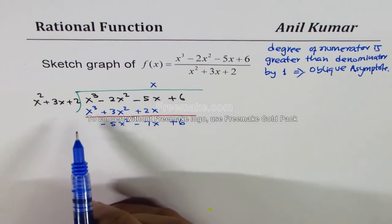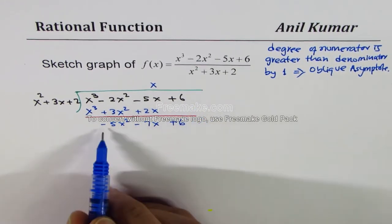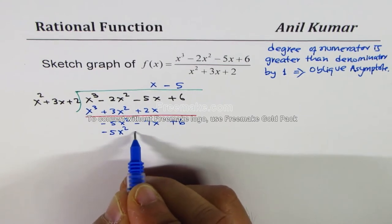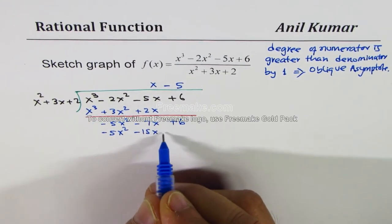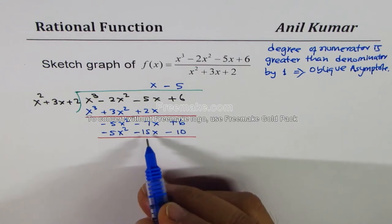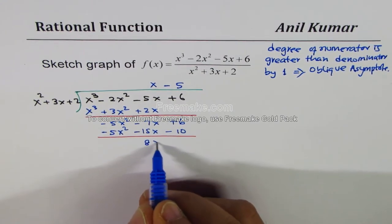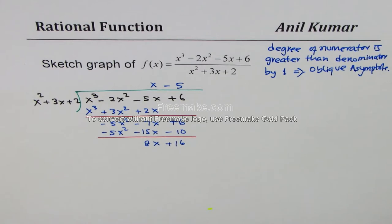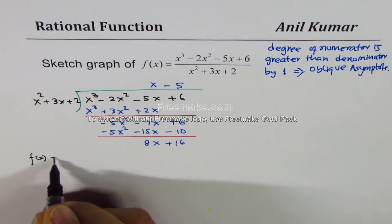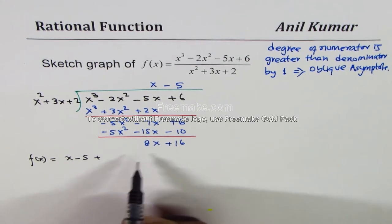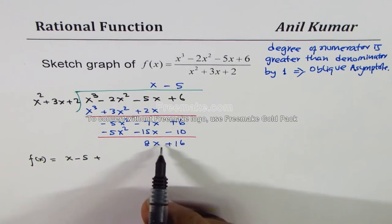Now we multiply by -5: we get -5x² - 15x - 10. Subtracting, we're left with 8x + 16 as the remainder. So we can write f(x) as the quotient x - 5 plus the remainder 8x + 16.